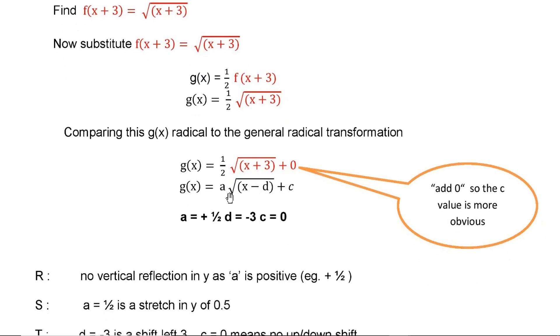Now what is a? This is ½, so a will be plus ½. d is what? It is -3. And c is what? 0.